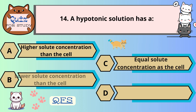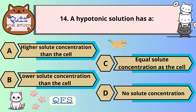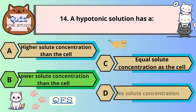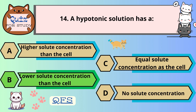Number 14. A hypotonic solution has — the correct answer is B. Lower solute concentration than the cell.